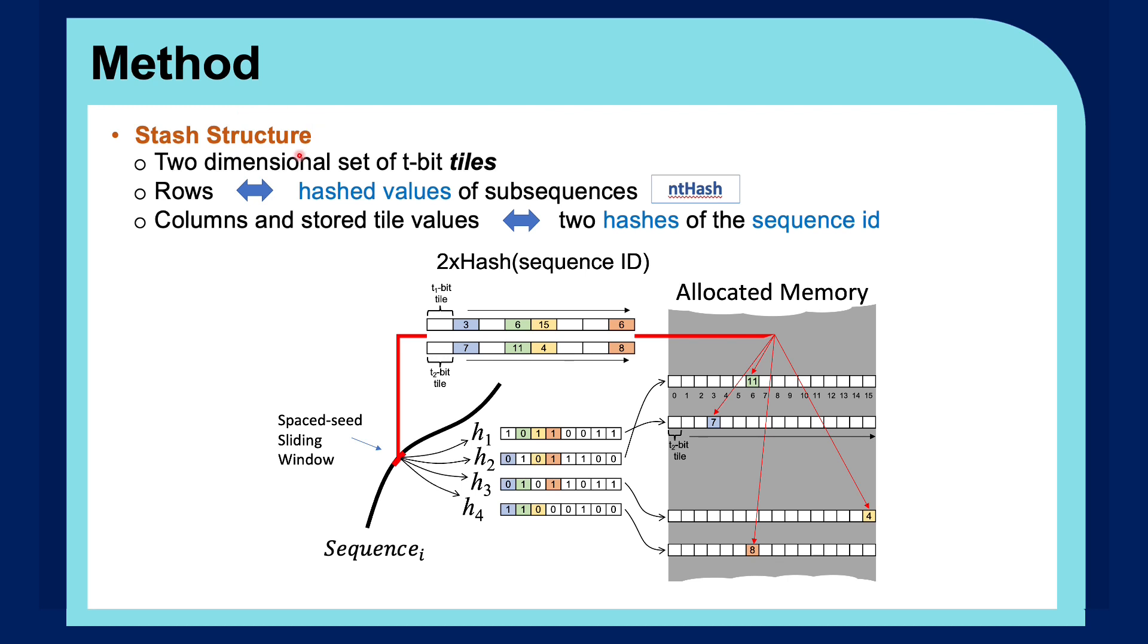The underlying structure of STASH is a two-dimensional set of t-bit tiles, where the rows or the memory loci are indicated by hashed values of subsequences, and the columns and the stored tile values are indicated by two hashes of the sequence IDs.